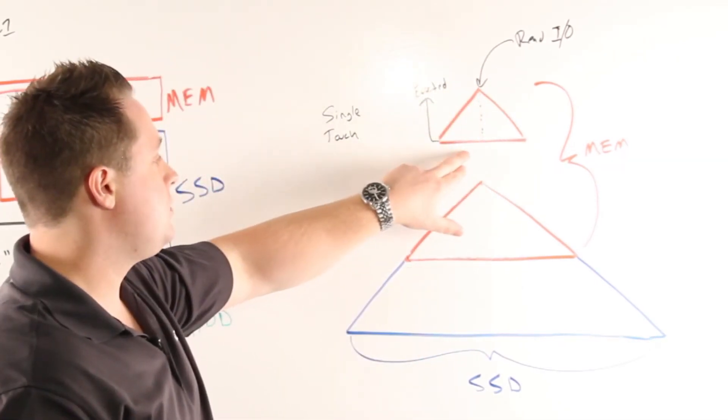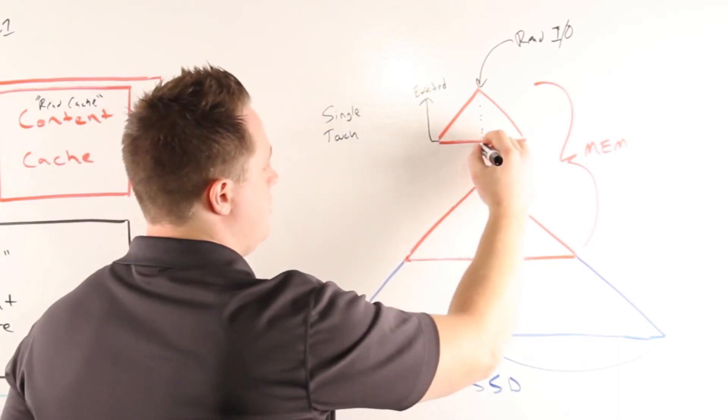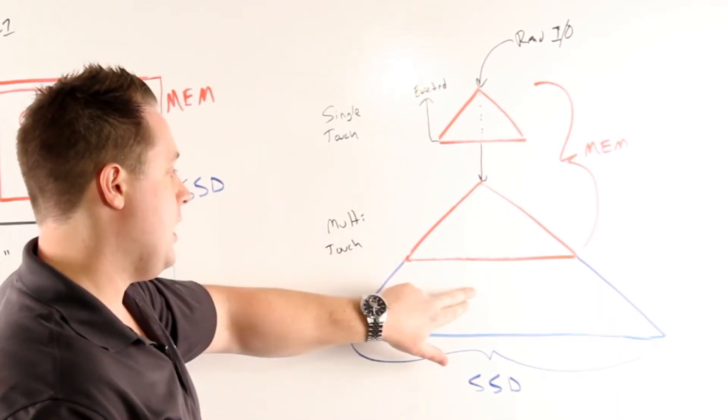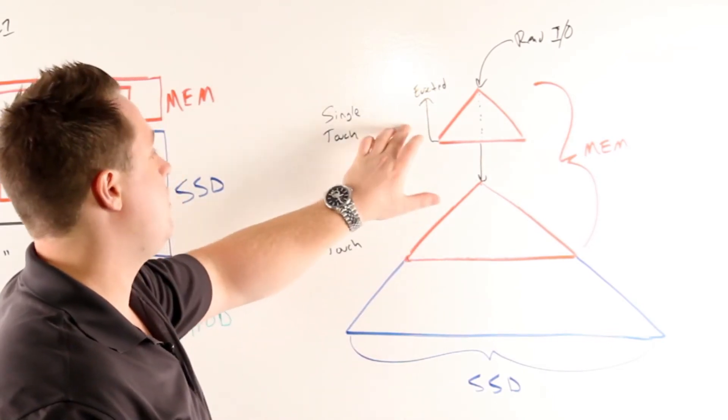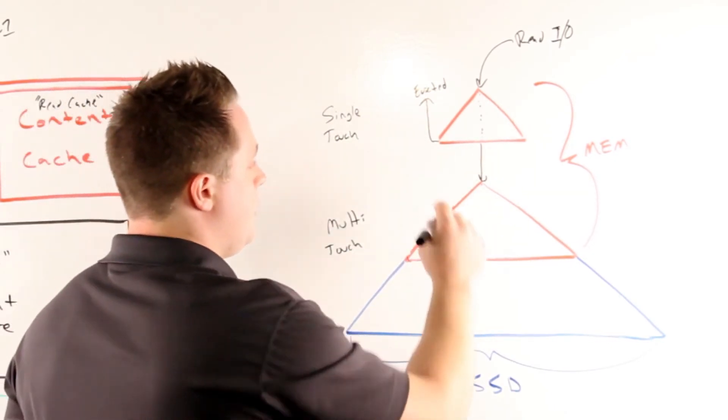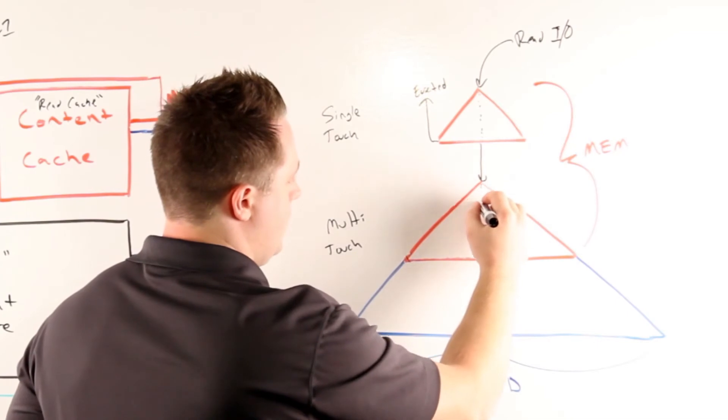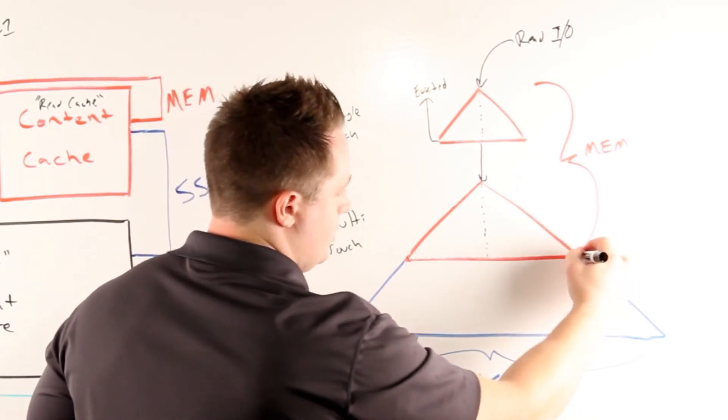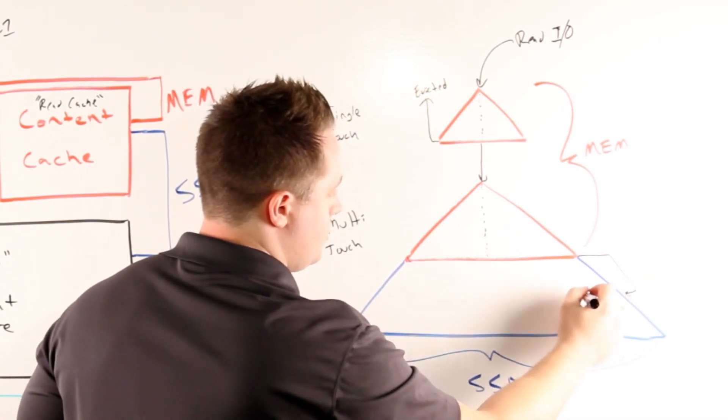For data that is subsequently accessed, that'll go into what we call the multi-touch pool. The multi-touch pool spans both memory and SSD and is much larger than the single-touch pool. From there, there are two LRU cycles: the first one in memory, and upon leaving that, it enters the LRU cycle of the SSD portion.